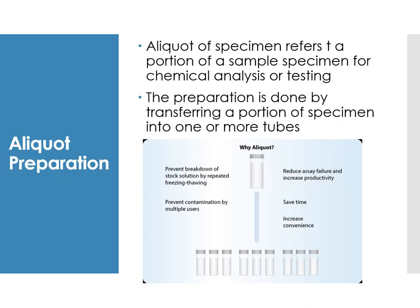Aliquoting refers to taking a portion of the sample specimen for chemical analysis or testing. The preparation is done by transferring a portion of the specimen from the mother tube — the primary main tube — into one or more smaller tubes, which are then used for the actual testing.